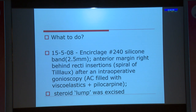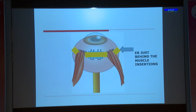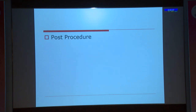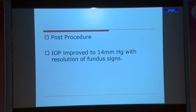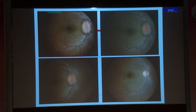We also decided to excise the steroid lump in the optimistic hope that the intraocular pressure would build up and the steroid lump should not cause increased IOP. This is a diagrammatic representation of what we did — we put a mattress suture in each quadrant and then did a band tie in one quadrant. Post-procedure, the intraocular pressure improved to 14 mmHg with resolution of fundus signs and normalization of the retinal architecture.